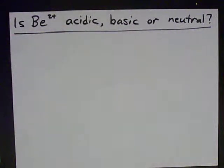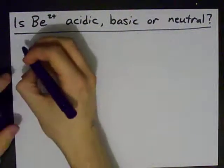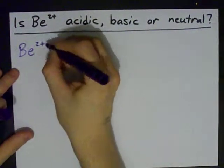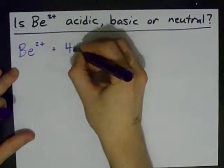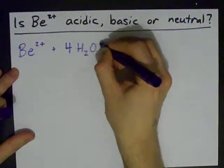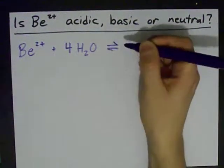Hey guys, is beryllium 2+ acidic, basic, or neutral in water? If you've seen my video about Al3+, you probably know what's coming. Beryllium in water actually forms a ligand complex with four waters. Now aluminum does this with six waters, but Be is a smaller atom and only four waters can fit around it.